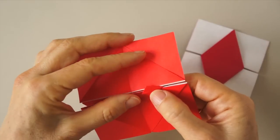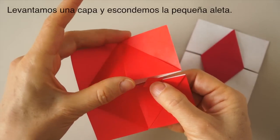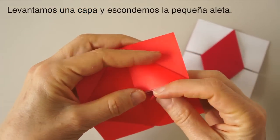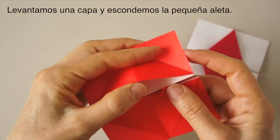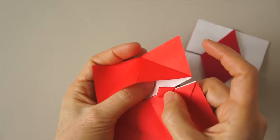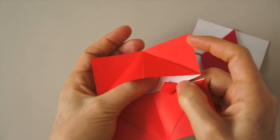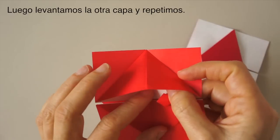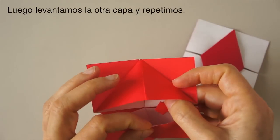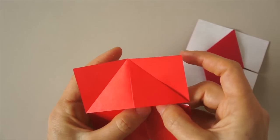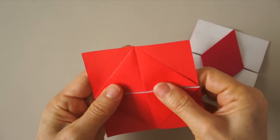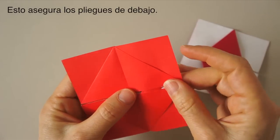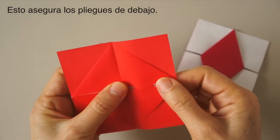Now, we lift only one layer and let the little flap be on the white layer, and the same here. And we hide it. And that locks the folds in place.